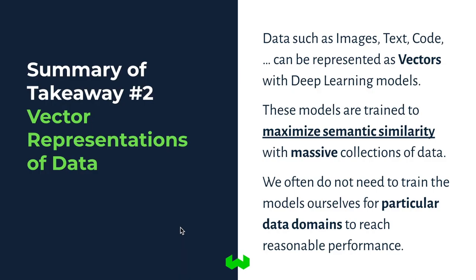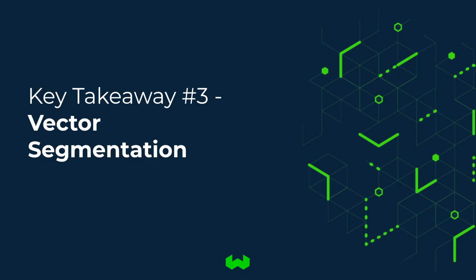To summarize, the second key takeaway is to understand vector representations of data. We can take all sorts of things like images, text, or code snippets and map them into vectors with predictions from deep learning models. Those models are trained to maximize semantic similarity between positive pairs, usually on massive collections like all of Wikipedia or internet-scale data. Because they're trained on such a massive amount of data, we often don't need to train the models ourselves for particular data domains to have reasonable zero-shot performance.